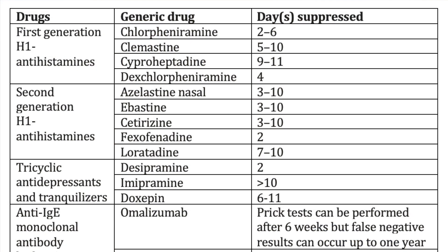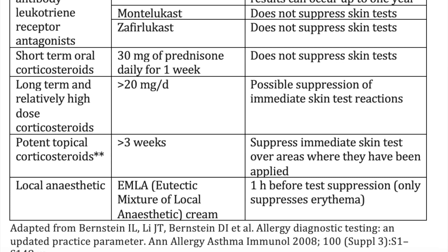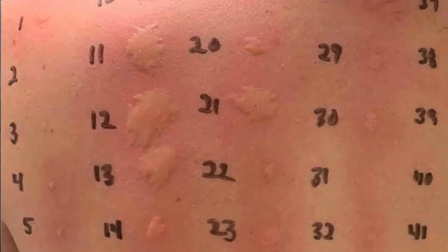An allergic skin prick test may be falsely negative or positive. Several factors can influence the results, such as prior history of medication, age of the patient, and the site being tested. Antihistaminic drugs can interfere with results and should be stopped a few days before the test is conducted. The reactivity of the test generally reduces with age, and the reaction to histamine is smaller in infants. The back is more sensitive to the test, and in the arm, the antecubital area is more reactive compared to other areas.